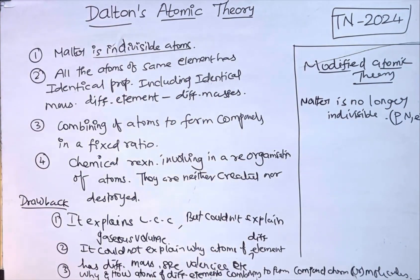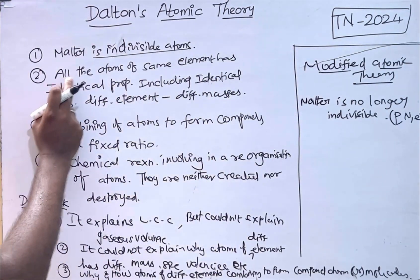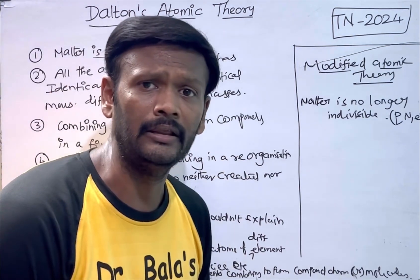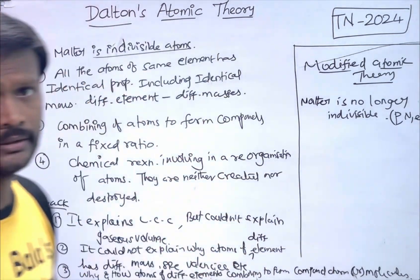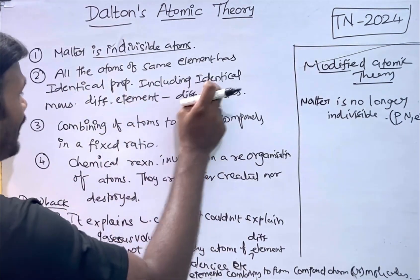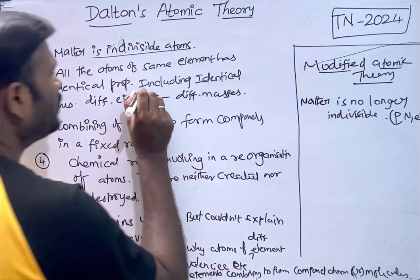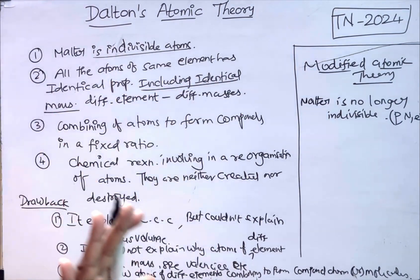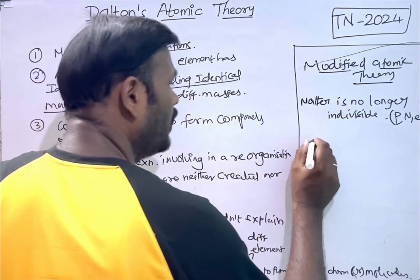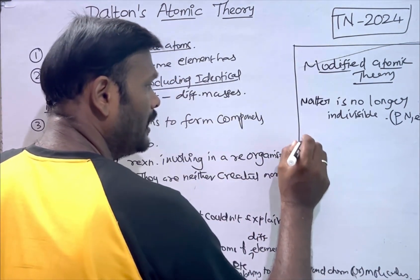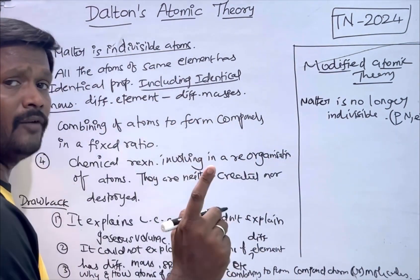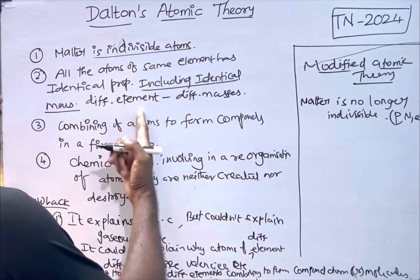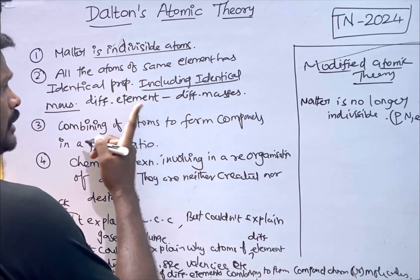The second concept — all atoms of the same element have identical properties including identical mass — may not hold. The discovery of isotopes gives the answer. Identical mass may not be there.